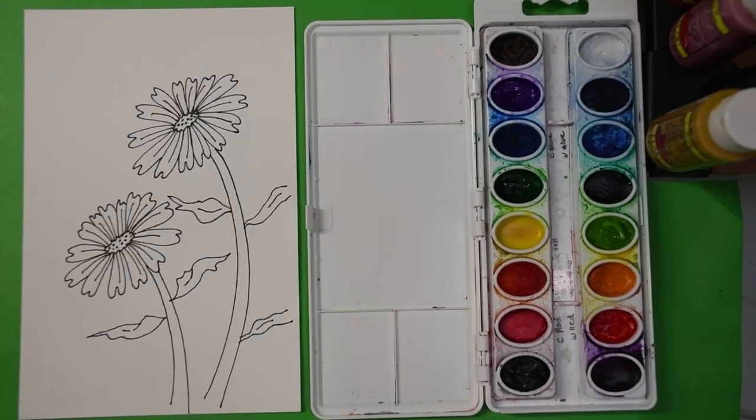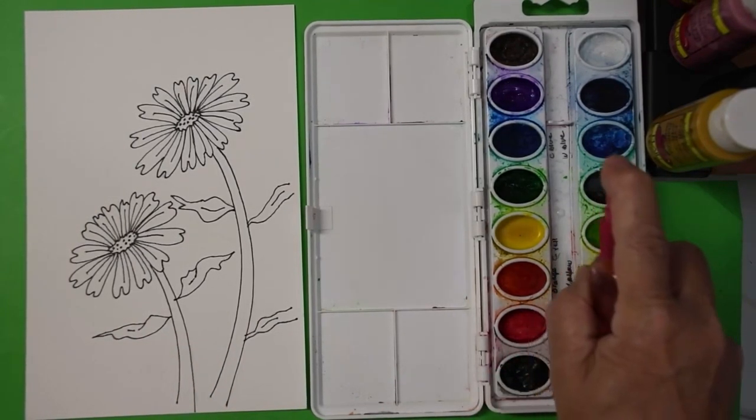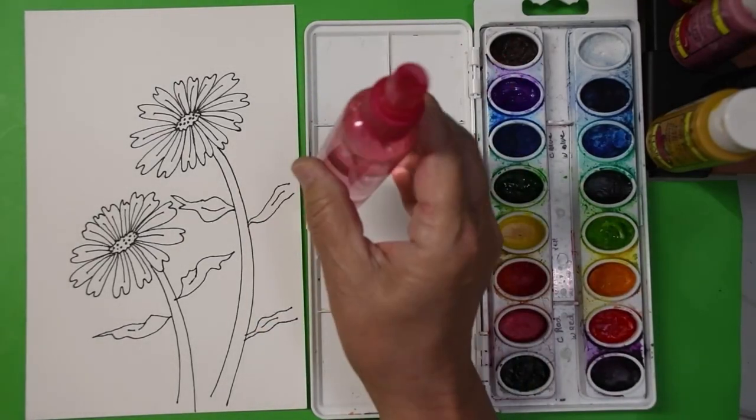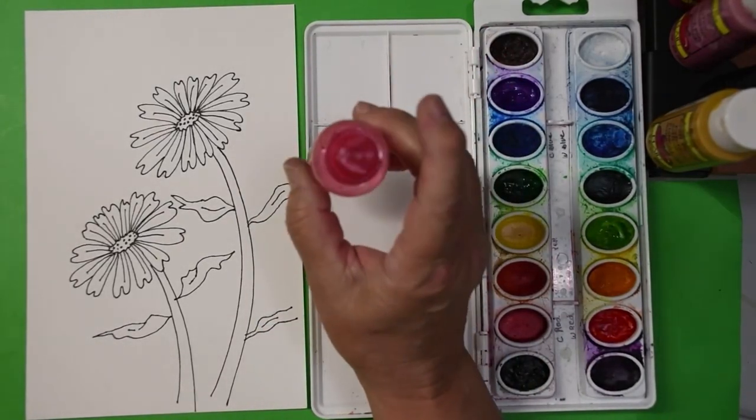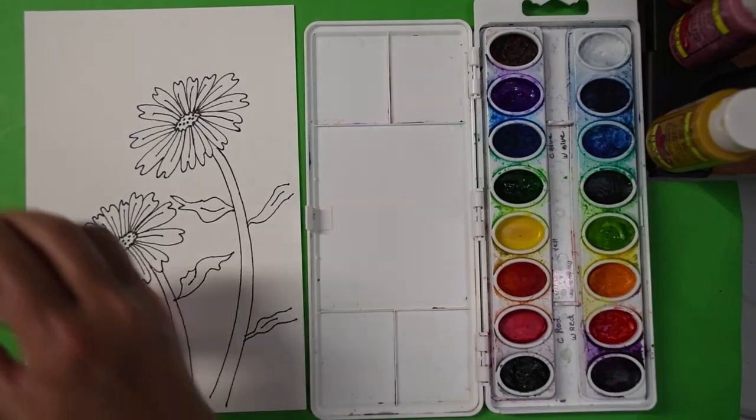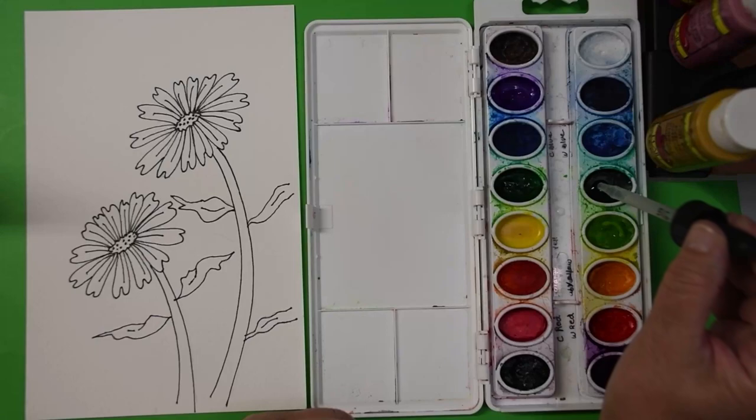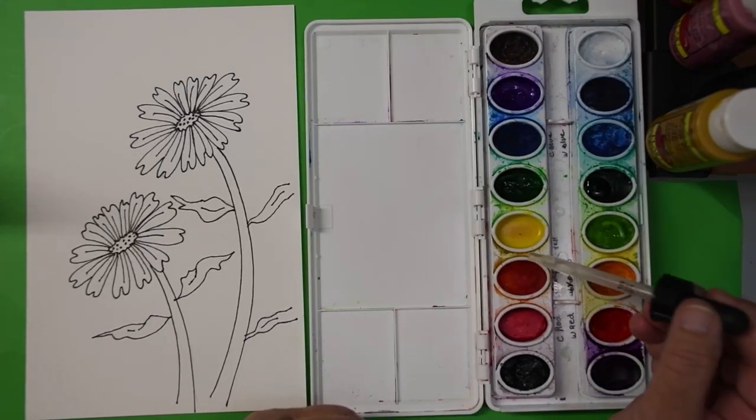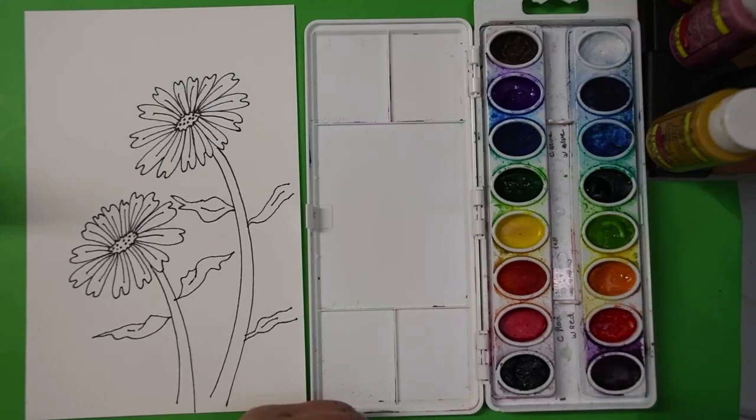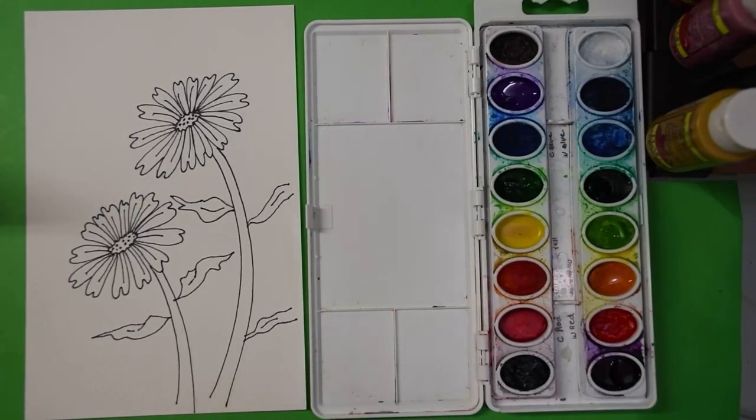We need to activate our paints just a little bit. One way to do that, if you're going to use several colors, is to spritz it with a spray bottle. Now on this one, I'm just going to use about five colors. I don't need to get them all wet. In that case, I just use an eyedropper and put a couple drops in there, and I will start to activate several of the colors I know I'm going to be using. We'll let that set a second or two, maybe a minute or two.